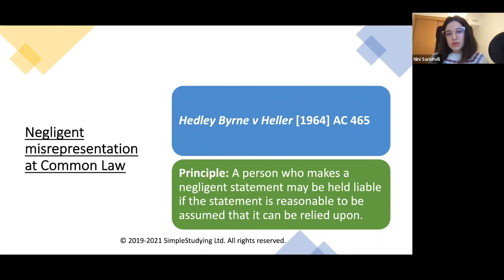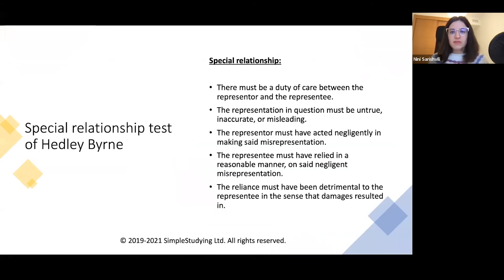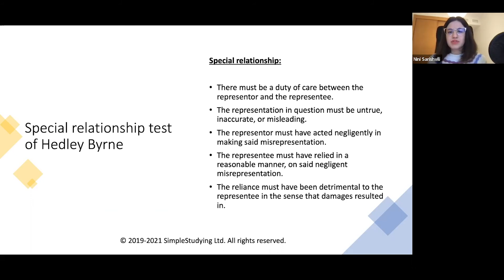An alternative ground you can propose is Hedley Byrne v Heller, negligent misrepresentation under common law. However, this can be quite challenging to prove because it requires the Special Relationship Test, which has five grounds, each of which must be discussed: there must be a duty of care between the representor and representee; the representation must be untrue, inaccurate, or misleading; the representor must have acted negligently; and the representee must have relied in a reasonable manner on the negligent misrepresentation.